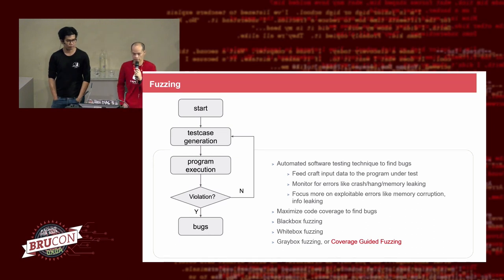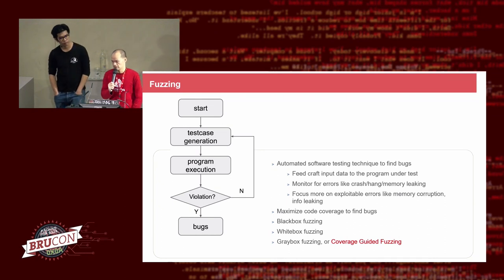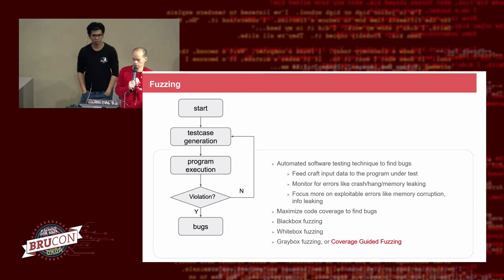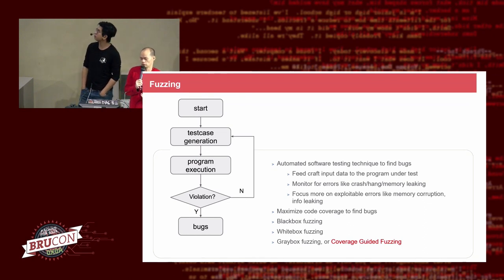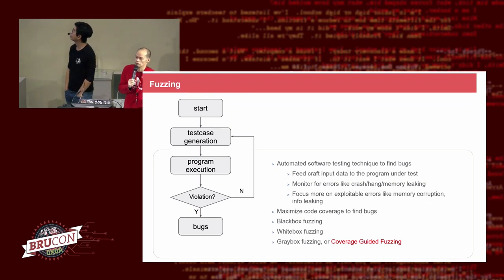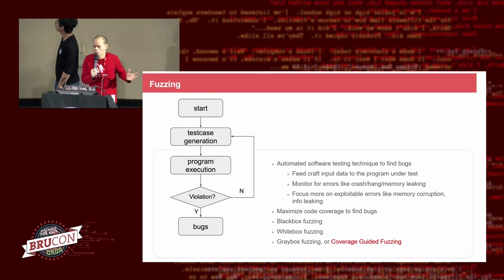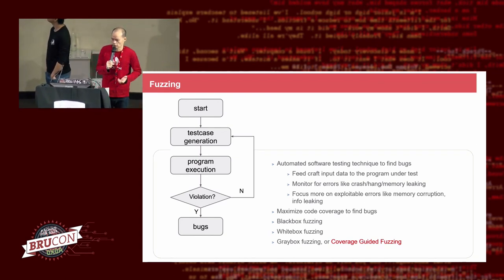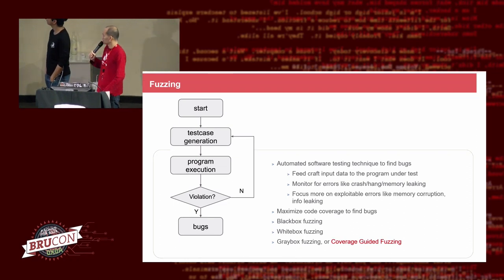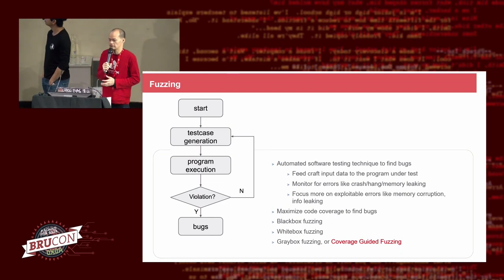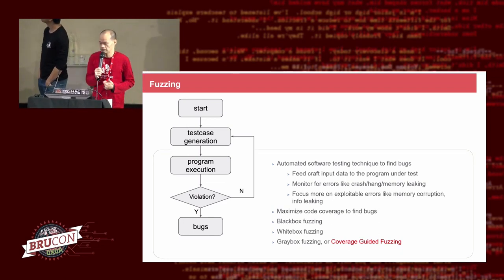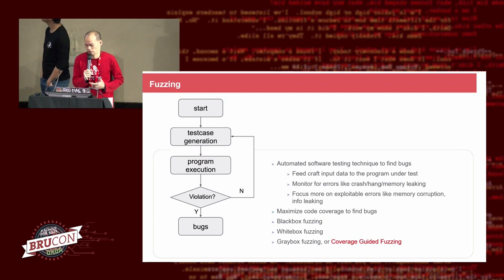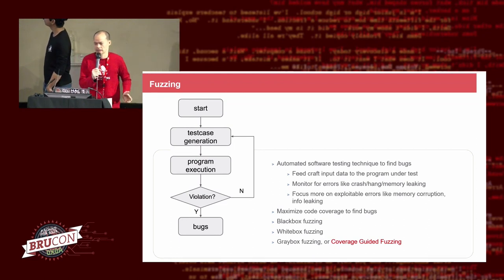Essentially there are three kinds of fuzzing. The first one is black-box fuzzing. This kind of fuzzing is pretty simple. The idea is that we randomly feed input to the program we want to test without knowing what's going on inside the program. We just feed random input and hopefully get some crash. Black-box fuzzing is very simple and easy to use, but it's kind of dumb and cannot find bugs that stay deep inside the program.